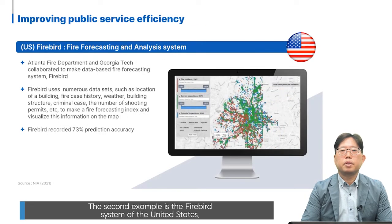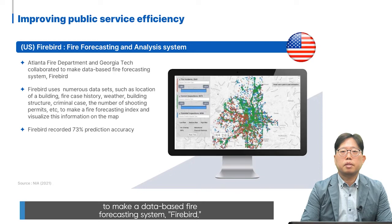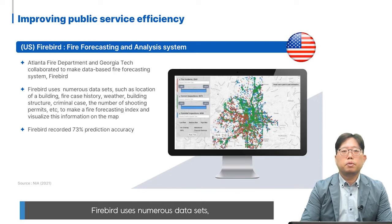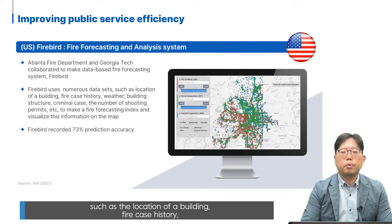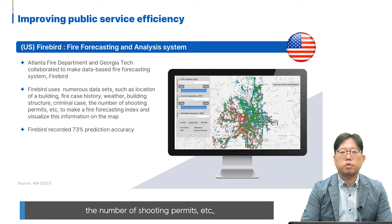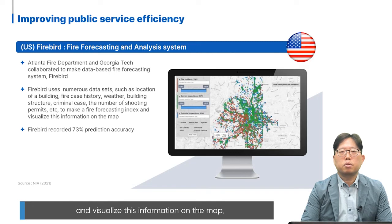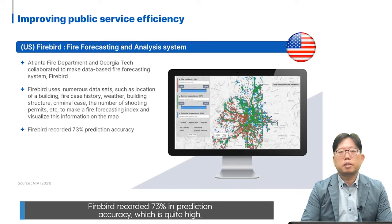The second example is the Firebird system of the United States. The Atlanta Fire Department and Georgia Tech collaborated to make a data-based fire forecasting system called Firebird. Firebird uses numerous data sets such as location of a building, fire case history, weather, building structure, criminal cases, number of shootings, permits, etc., to make a fire forecasting index and visualize this information on a map. Despite the difficulty of prediction, Firebird recorded 73% prediction accuracy, which is quite high.